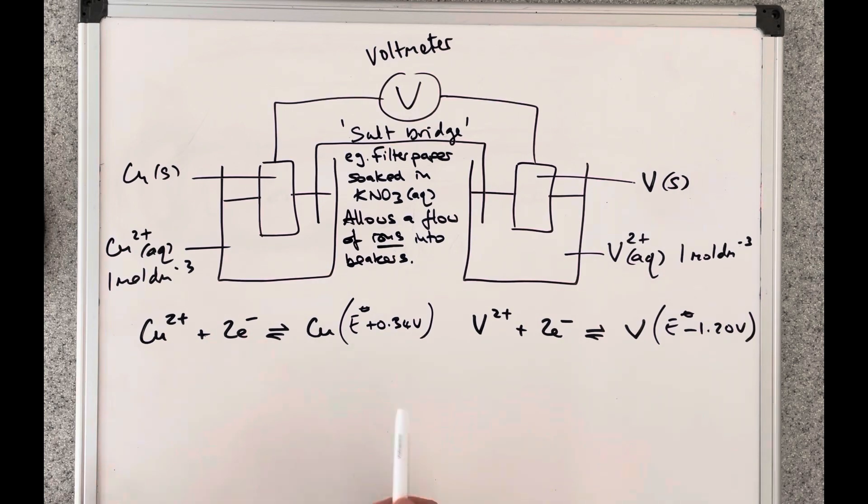So you can clearly see that the copper 2 plus with its more positive standard electrode potential is better at accepting electrons than the vanadium 2 plus.